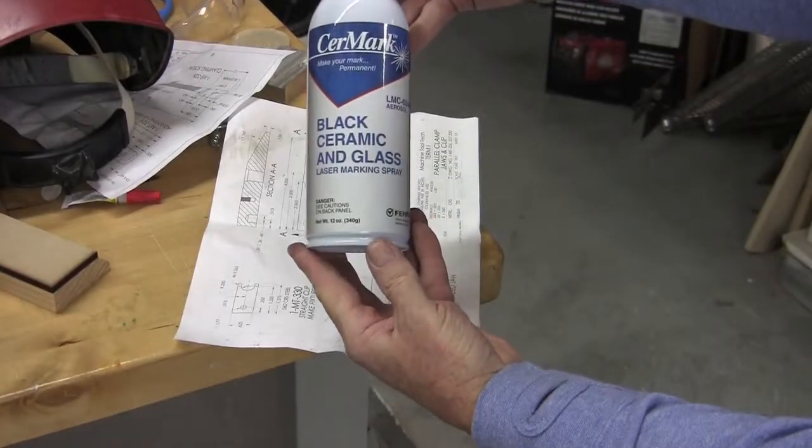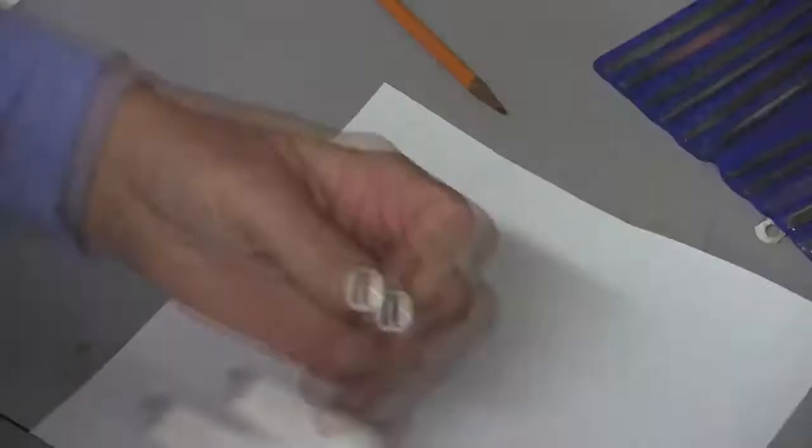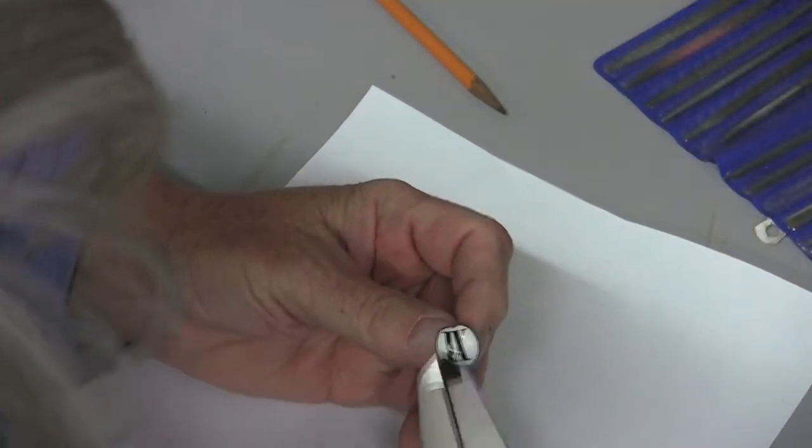This is a marking compound made by a company called Cermark, and it's made for marking ceramic and glass using a laser. The original was probably painted and re-fired with a paint on it, but we're doing it a little bit more modern here.